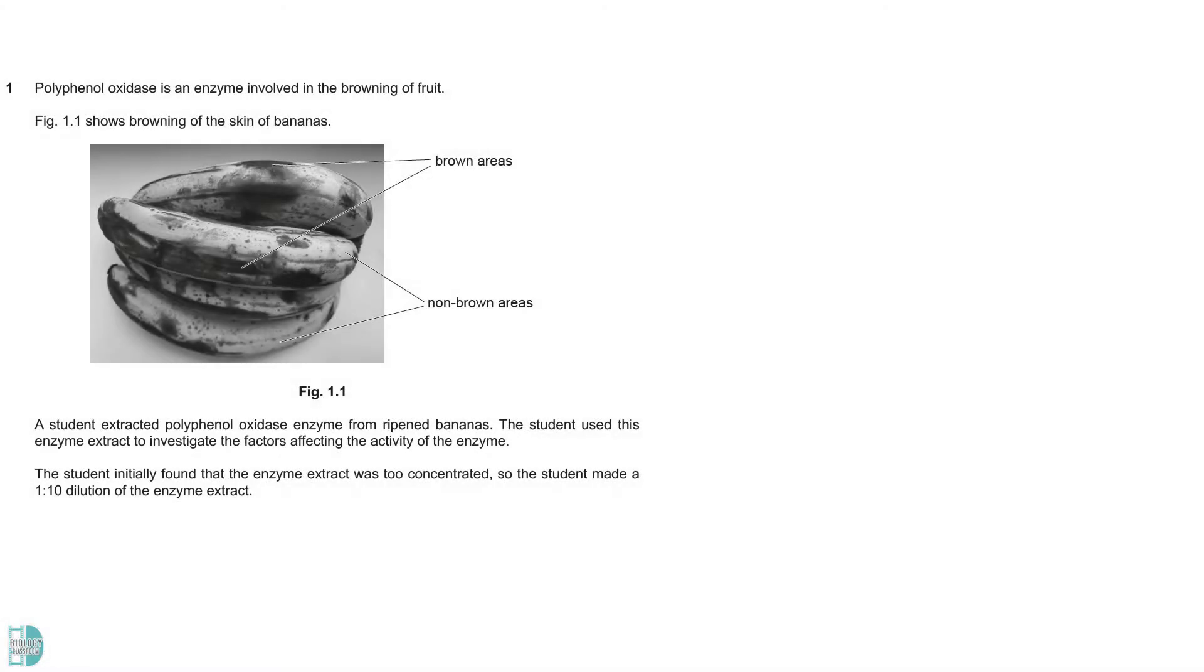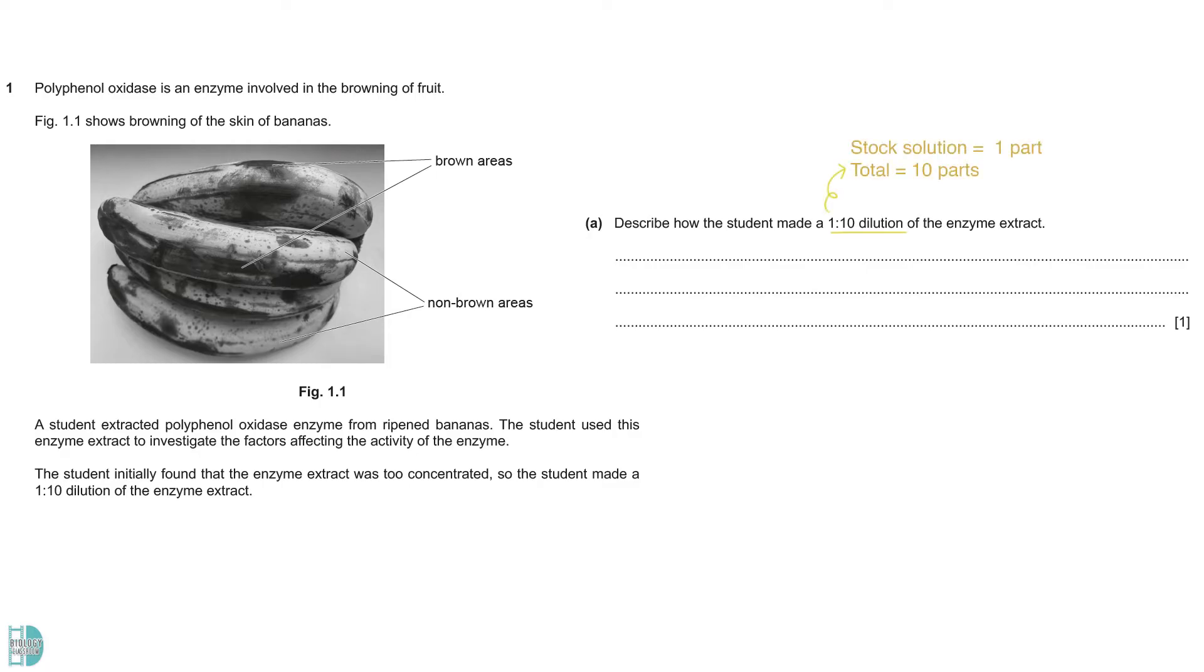Question 1 talks about an enzyme involved in the browning of fruits such as bananas. Part A wants you to describe how to make a 1 to 10 ratio dilution of the enzyme extract. A 1 to 10 dilution means 1 part of the stock solution in a total of 10 parts. Mix 1 part of the enzyme extract, polyphenol oxidase, with 9 parts of water for this dilution. When you do this, the concentration of the new solution will be 1 over 10 of the stock solution.